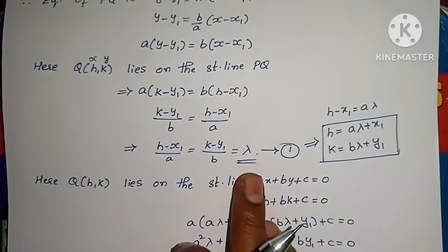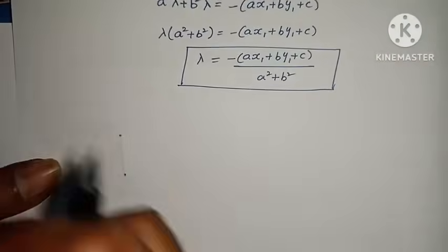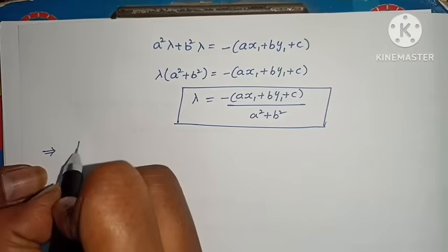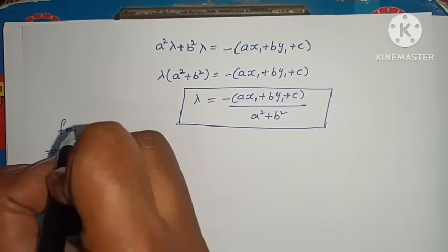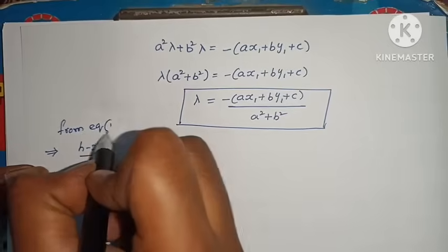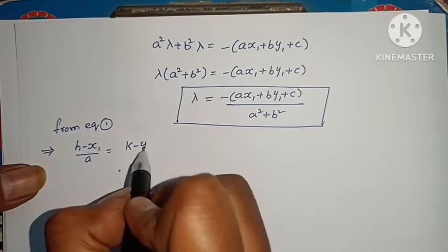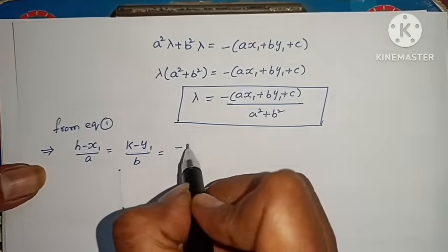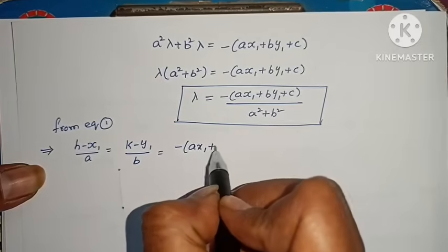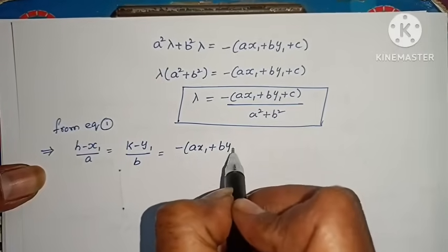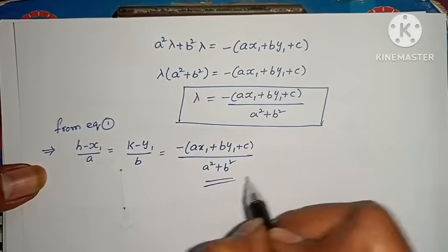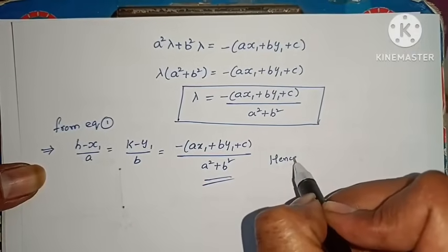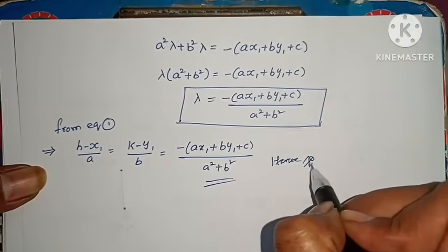Substituting this lambda value into equation 1: (h minus x₁) by a equals (k minus y₁) by b equals minus of (ax₁ plus by₁ plus c) by (a² plus b²). Hence proved — the foot of the perpendicular theorem is complete.